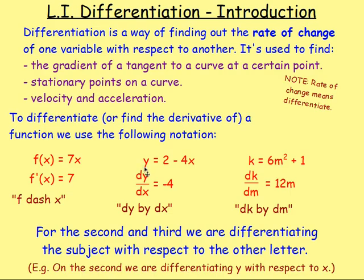Remember, when you change the subject — if the subject is y, it's y equals. So we're differentiating the subject with respect to the letter on the other side. Here we're differentiating y, so we've got dy, and on the other side it's x, so it's dy/dx. Here the subject is k, so we're differentiating k — that's dk — and on the other side the letter is m, so it's dk/dm. On the second example, we're differentiating y with respect to x.